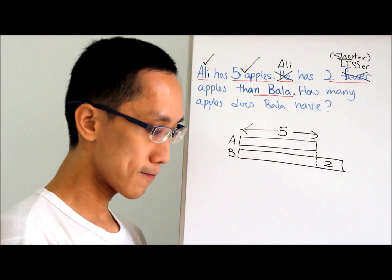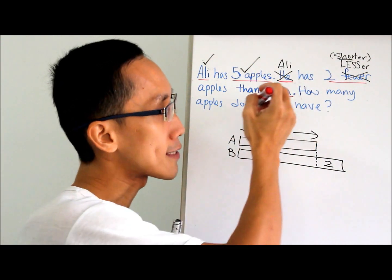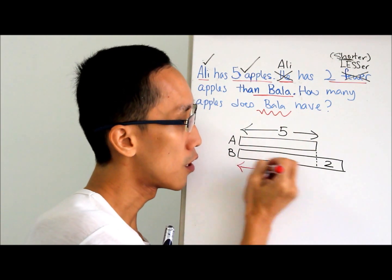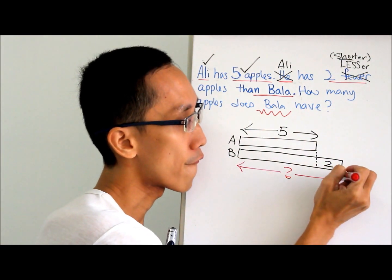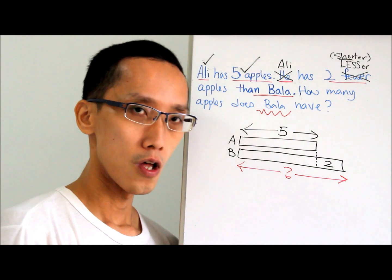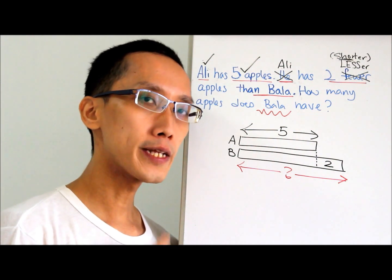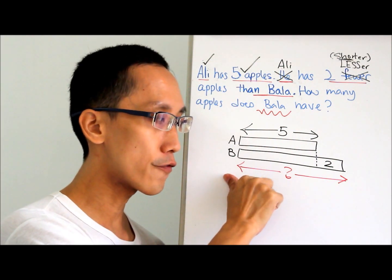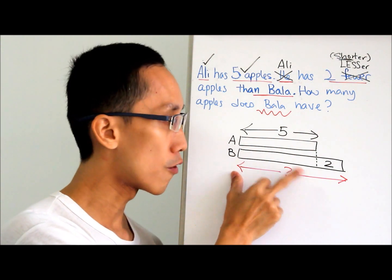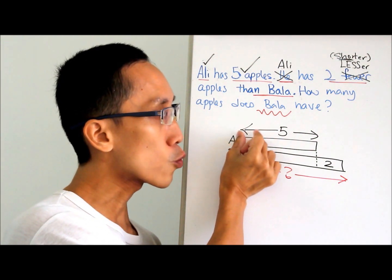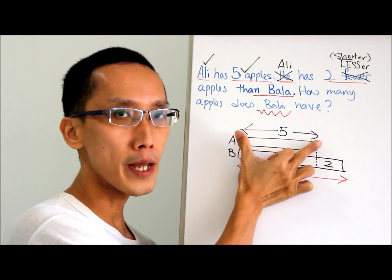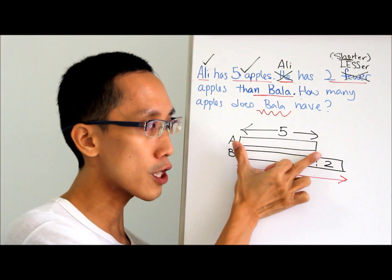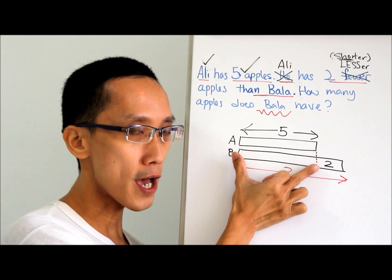Now, what does the question want? Bala. So Bala is from here to here. What should be the answer? Use your thumb and middle finger to guide them along. From here to here is how many? Five. So here will be five.